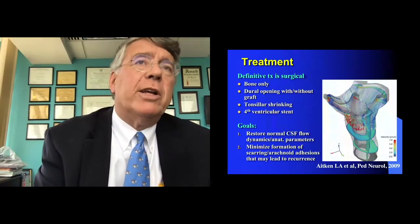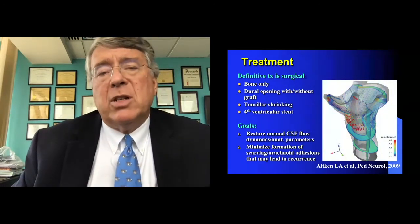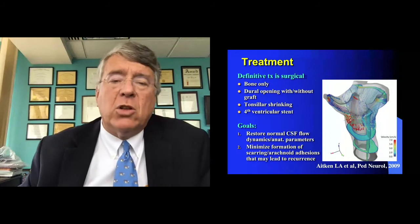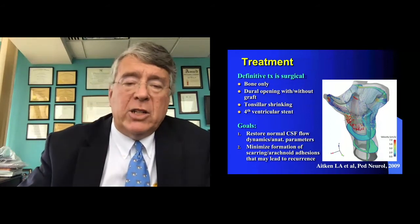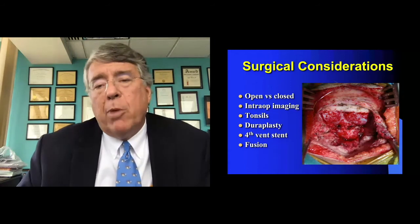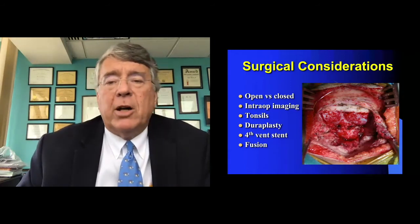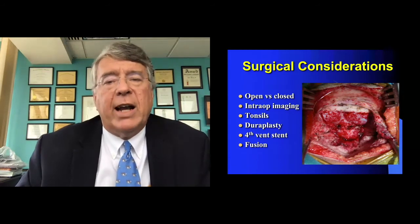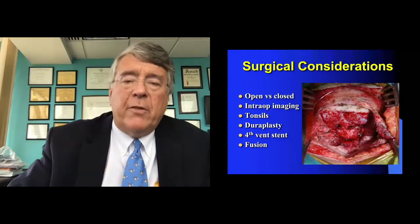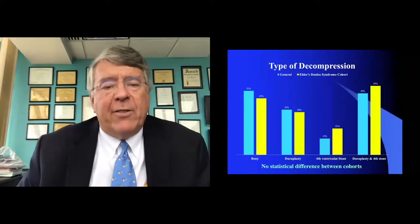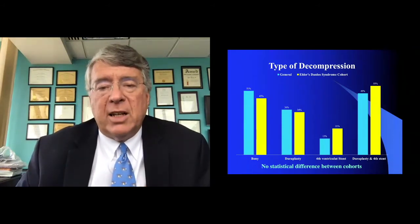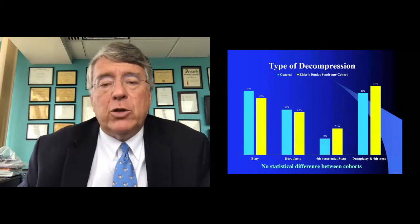Definitive treatment for Chiari is generally surgical. The goal is to restore normal CSF flow dynamics and minimize the formation of scarring and arachnoid adhesions, which could lead to recurrence. There are lots of considerations: do you do bone only, or open the dura with a duraplasty? We use intraoperative ultrasound to define whether we've released enough. What do you do with the tonsils? Do you need a fourth-ventricle stent? About half our patients undergo bone only and the other half undergo open exploration with duraplasty, and a significant percentage have a stent. Between the two cohorts, no difference.